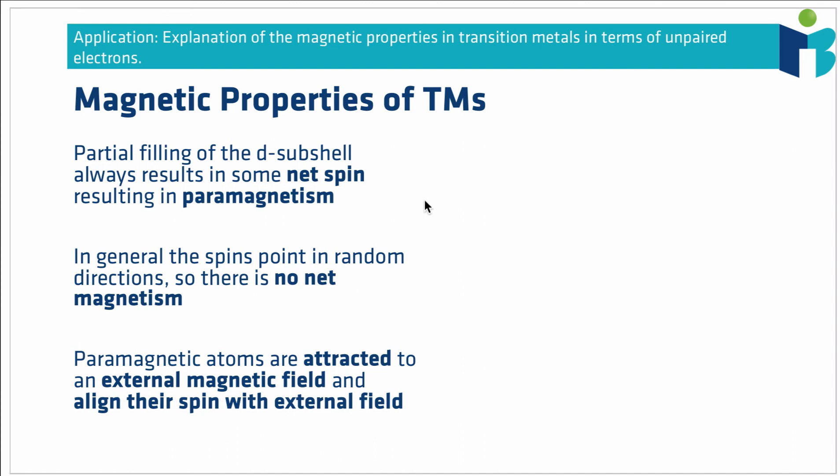So finally, thinking about the magnetic properties of transition metals, now this all arises out of the fact that when you have an incomplete d subshell, you always end up with some net spin. So if you take an example of a transition metal, something like manganese, I can write out its electronic configuration in terms of an electron box model.